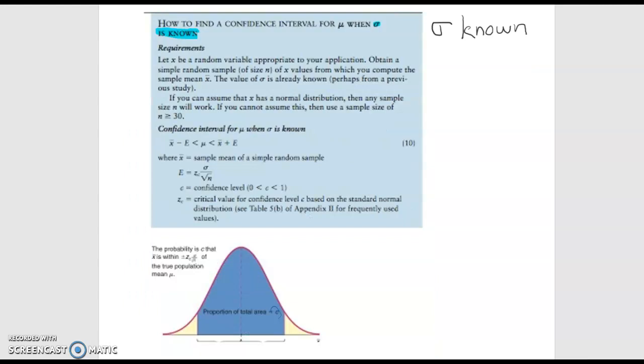Let's talk about the requirements for finding a confidence interval for mu when sigma is known. Remember mu is our population mean while sigma is the population standard deviation. So in this video we're doing problems where the population standard deviation is known.